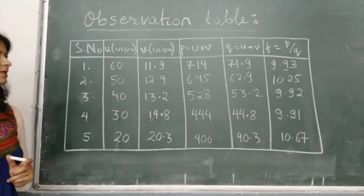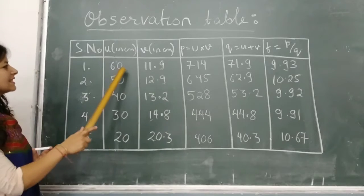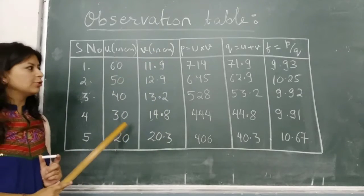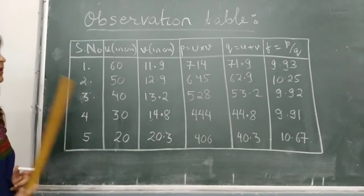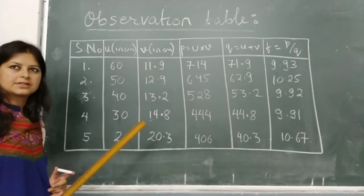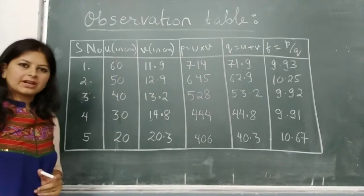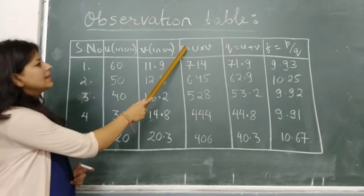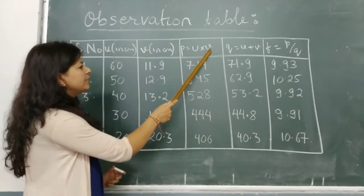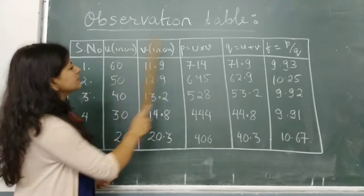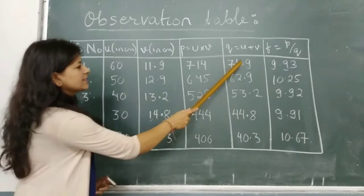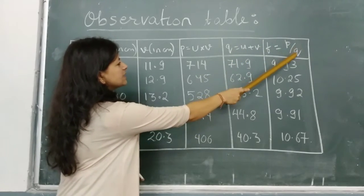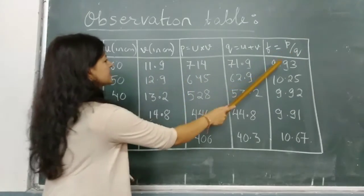After taking the 5 readings for different object positions at 60, 50, 40, 30, and 20 centimeters, these are the image distances we found using the no-parallax method. This is the complete observation table. You take 5 readings: for U equal to 60, V is 11.9 centimeters. You calculate P, the product of U and V — that is 60 times 11.9 — and Q, which is U plus V — that is 60 plus 11.9. Finally, to find the focal length, you find the ratio P divided by Q: 714 divided by 71.9 equals 9.93.